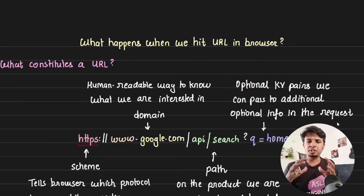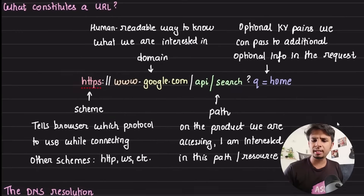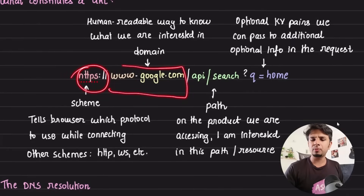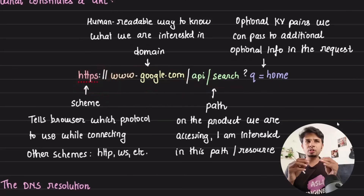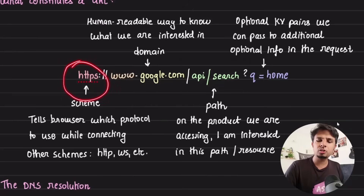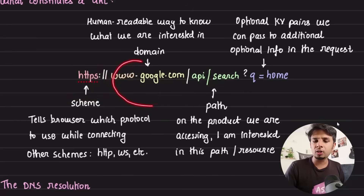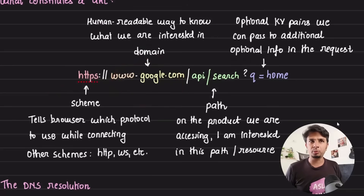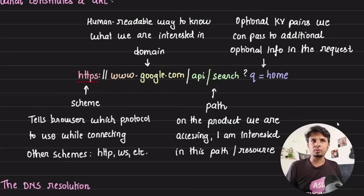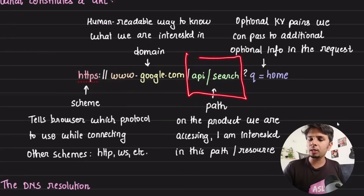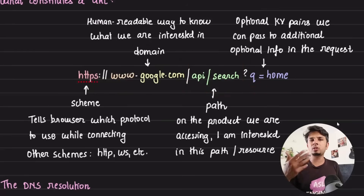Let's start with answering a very simple question: what constitutes a URL? A URL typically looks like this: https://www.google.com/api/search?q=home. This URL is made up of many fragments. First is 'https', which is called the scheme — it tells that we want to connect to this domain over a specific protocol. It could be HTTP, HTTPS, WS, and so on. Then we have the domain www.google.com, the path /api/search, and finally the key-value pairs called query parameters.